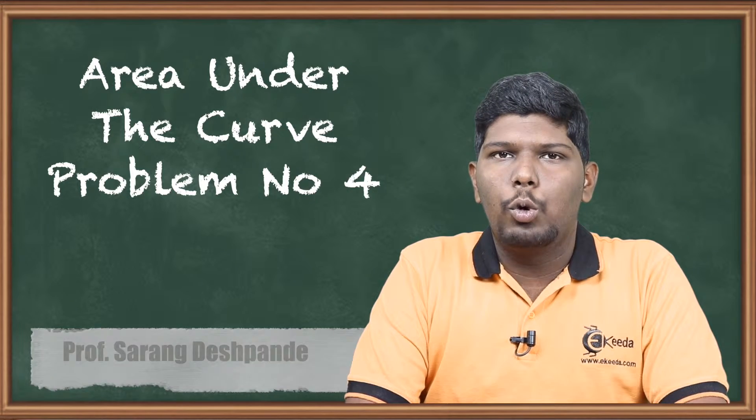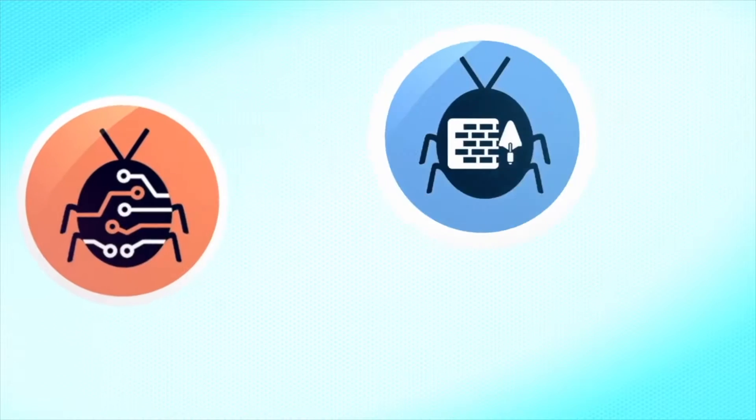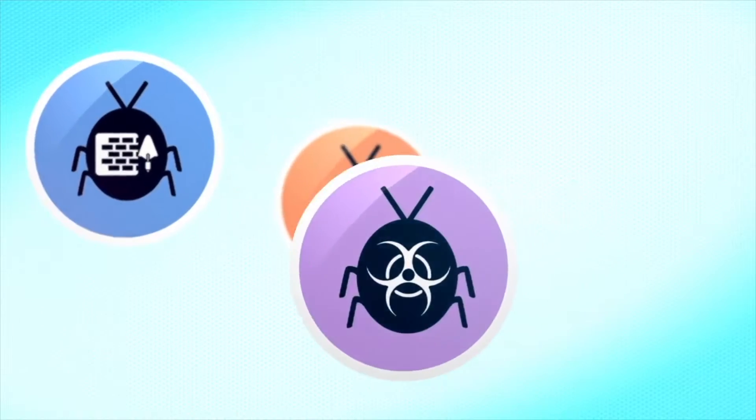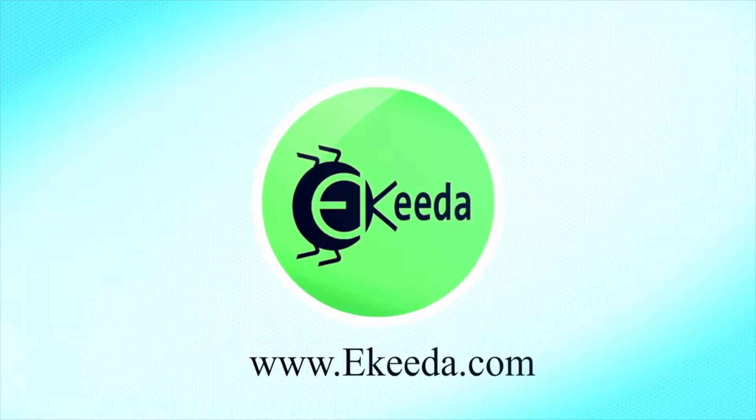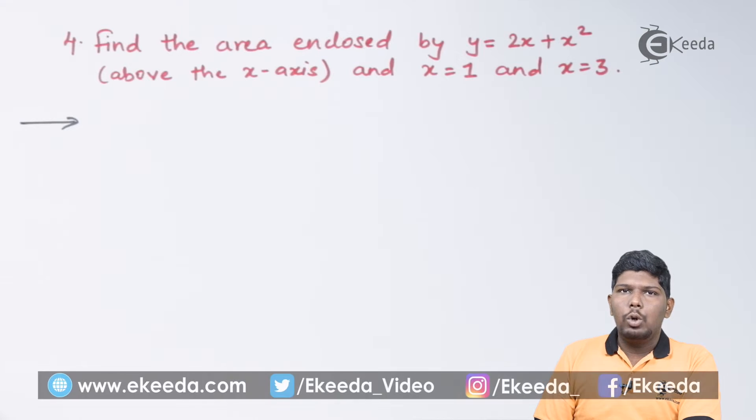Let us start with problem number 4. Find an area enclosed by y equals 2x plus x square above the x-axis and x equals 1 and x equals 3.